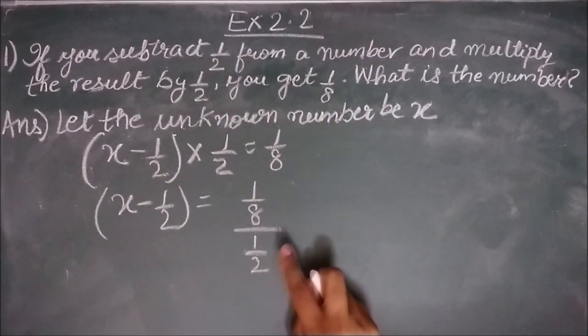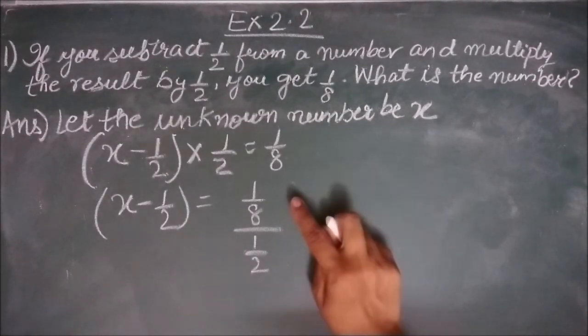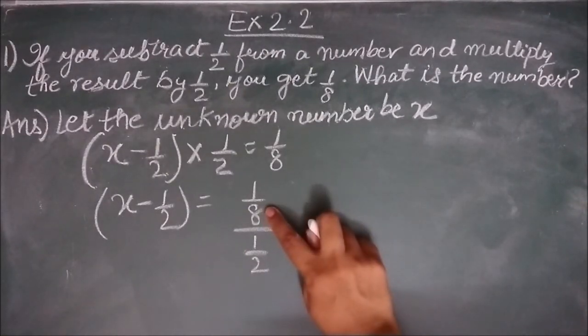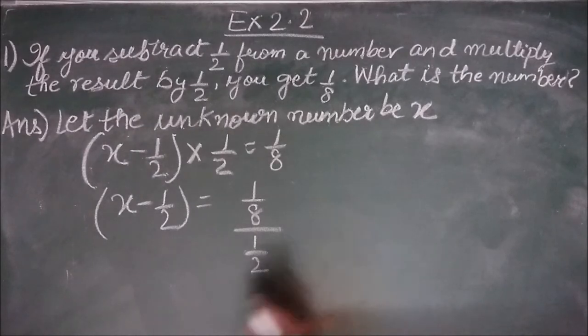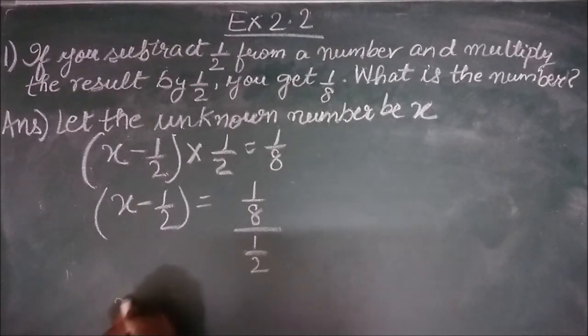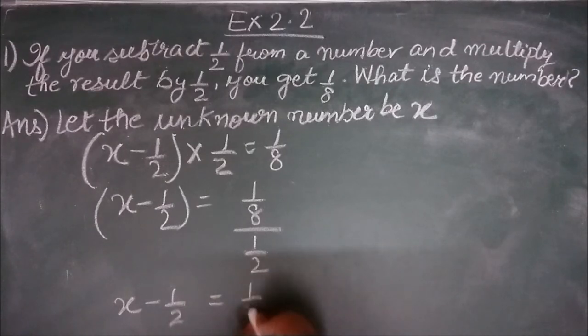When a fraction is in denominator, to bring it in multiplication with the numerator, you will have to reciprocate it. That is, 1 by 2 becomes 2 by 1. x minus 1 by 2 equal to 1 by 8 into 2 by 1.